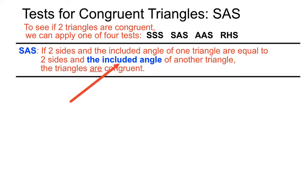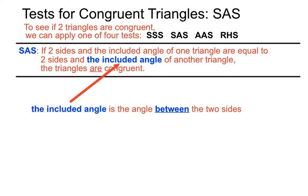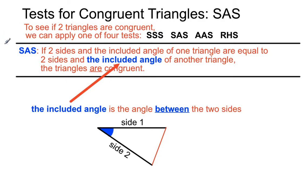Let's check out what an included angle is. If something's included, it's part of the mix — it's in between the two sides that we're talking about. If we've got side one and side two as part of a triangle, then the angle between those two sides is called the included angle. That blue shaded area is the included angle. It's important for this test that we have information about two sides and the angle that's in between them, otherwise we might have troubles.